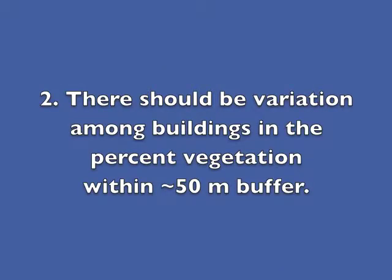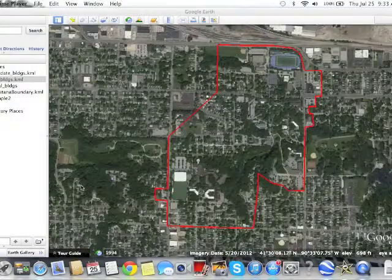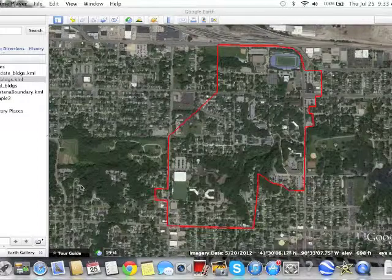Number two: there should be variation among buildings in the percent vegetation within about a 50-meter buffer. At this point in the project, you don't need to know exactly how much vegetation surrounds a building, but using an aerial photo, you can get a general impression of how much vegetation there is. Using Google Earth, you can get a really good idea of how vegetation is spread throughout your study area.